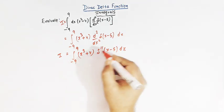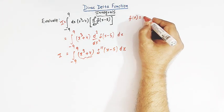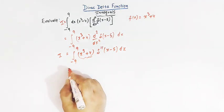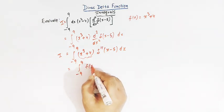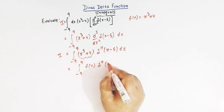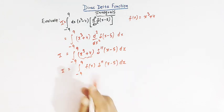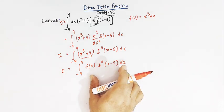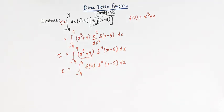Now let us denote this function by f of x, so f(x) = x³ + 4. The integral now looks like the integral of f(x) times delta double prime of x minus 5, dx. Let us state the property which is going to be used here to get the value of the Dirac delta function integral.